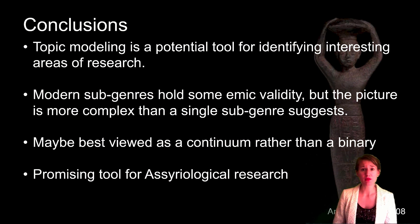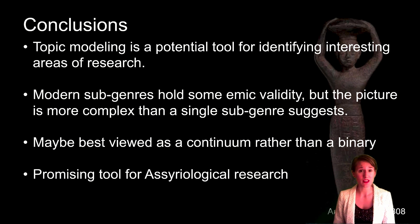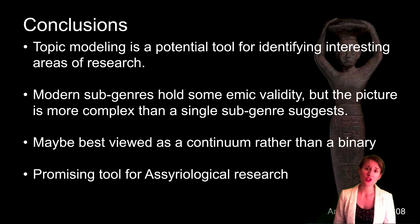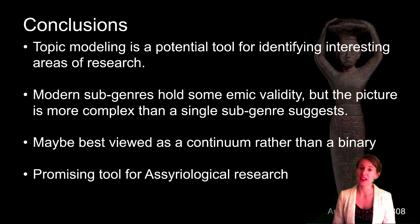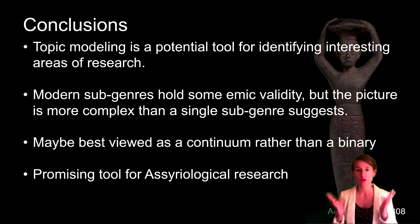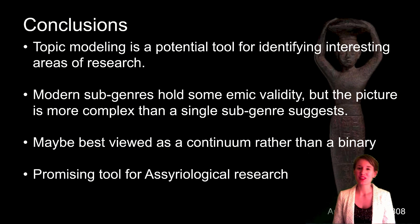Topic modeling contains a lot of potential as a heuristic device that can both challenge our assumptions and provide a way to quantitatively test our conclusions. The consideration of topic distribution across sub-genres shows that current classifications of royal inscriptions do appear to have some emic validity, though the presence of topics that span sub-genres suggests that the ancient understanding of royal inscriptions may have been more complex — as a spectrum or continuum rather than a binary system. There is clearly more work to be done, but hopefully even this preliminary study and the patterns observed show the potential use of topic modeling for Assyriology.